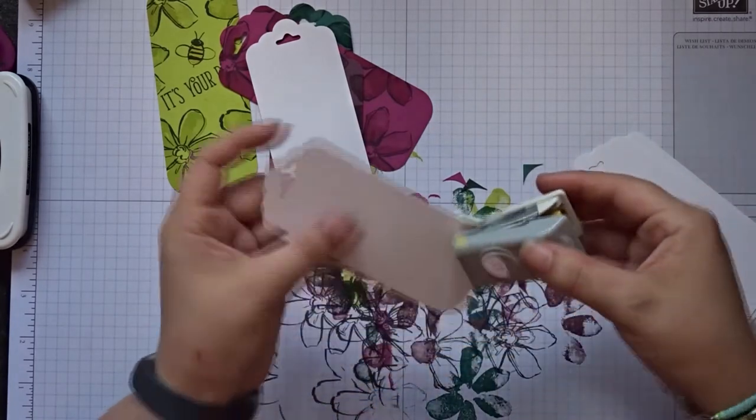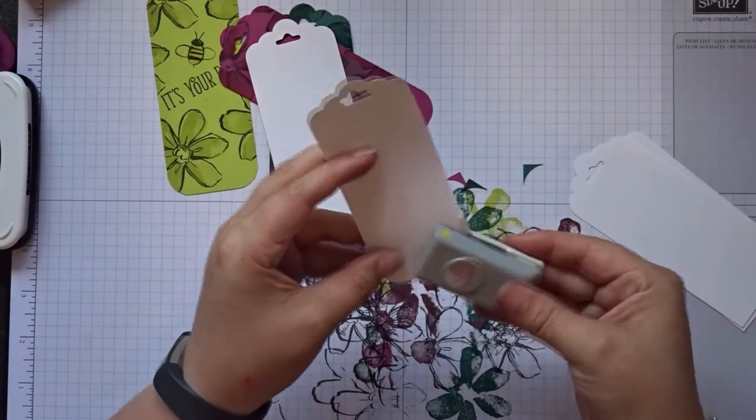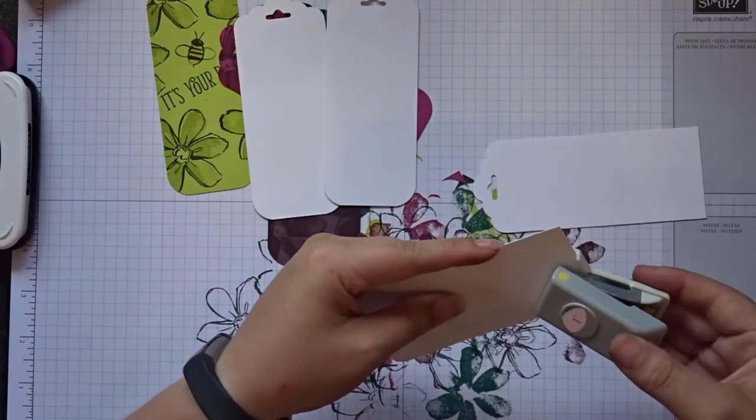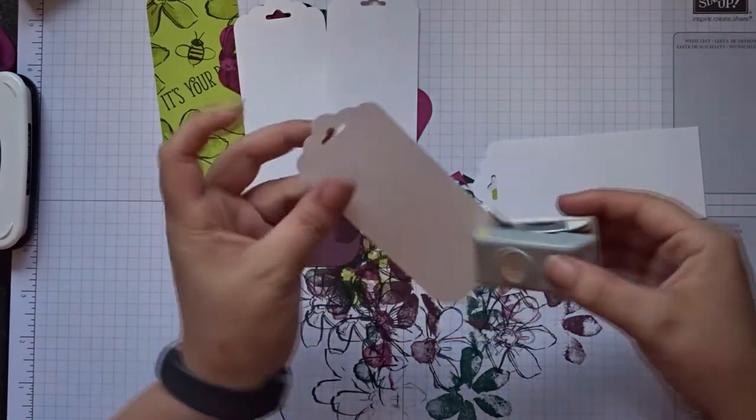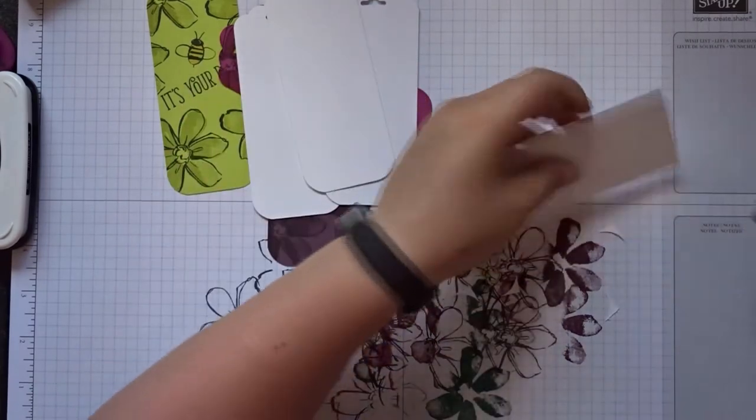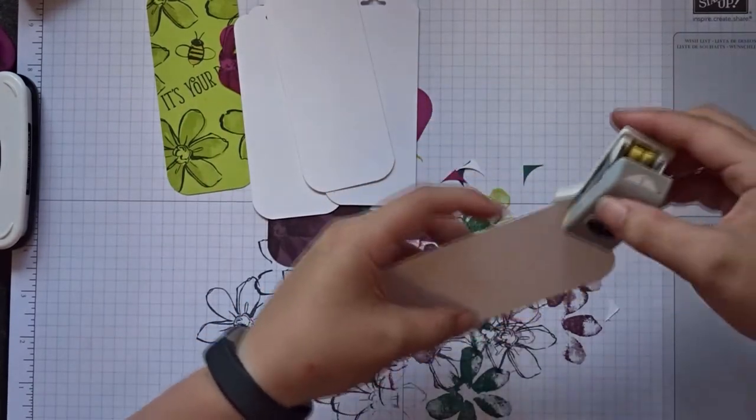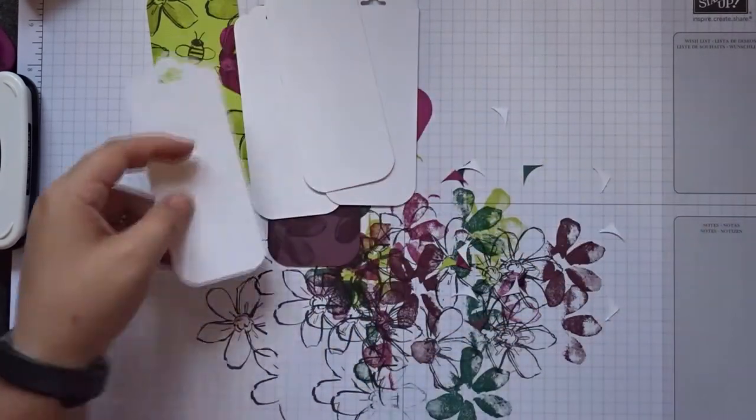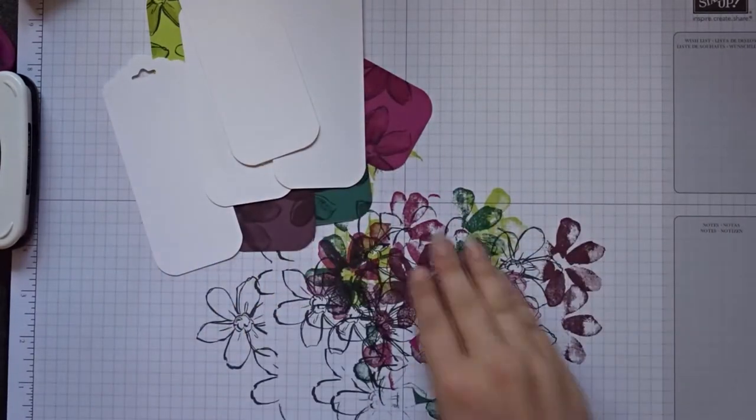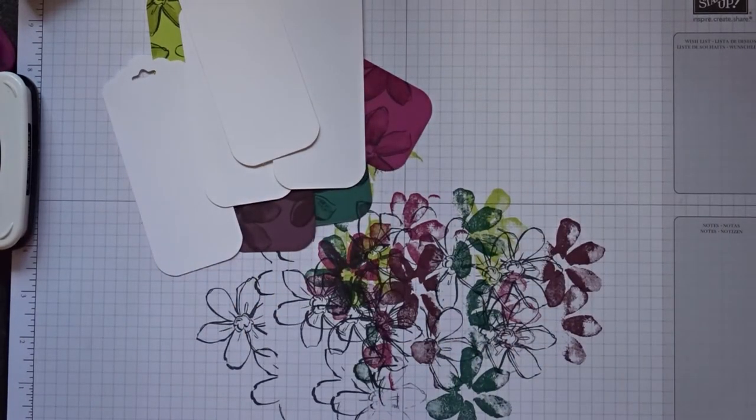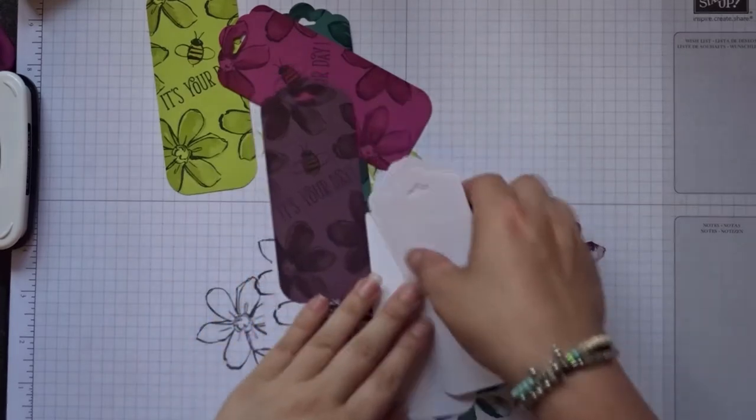We're just going around the bottom corner of the four ink colors and the Whisper White. Again, very quick once you've got a little system going, a little conveyor belt. It works really well. So we've now got all of our bases together.